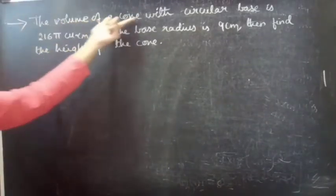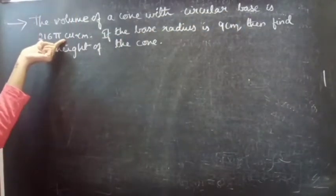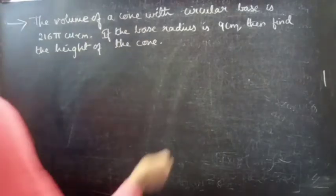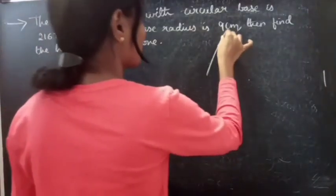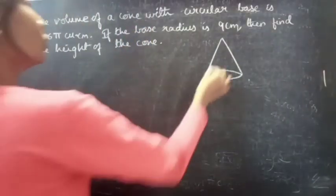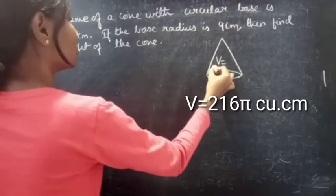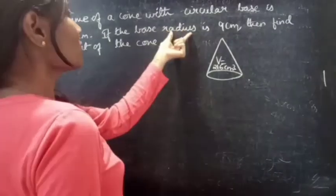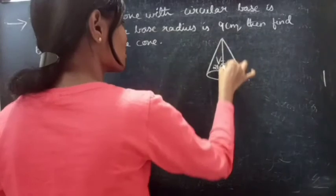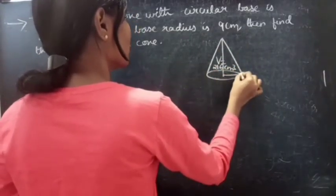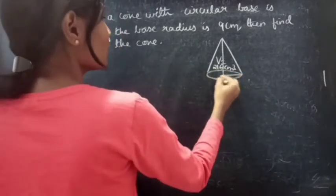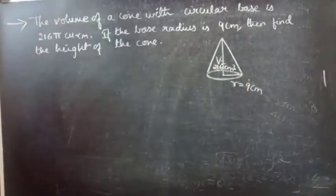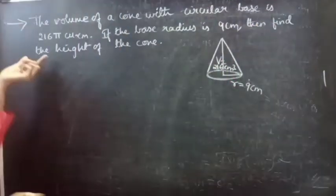So we are given the volume of a cone with circular base is 216 pi centimeter cube. We are given volume equals to 216 pi cubic centimeter. The base radius is 9 centimeter. We need to find the height of the cone.